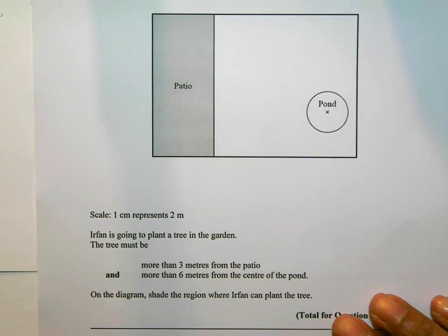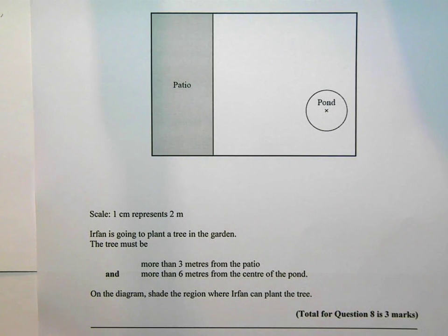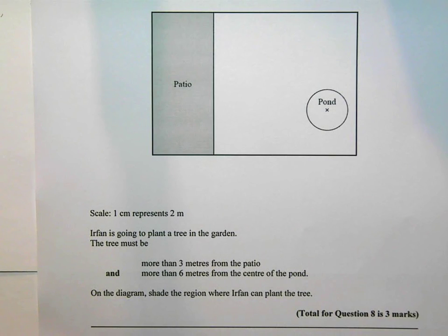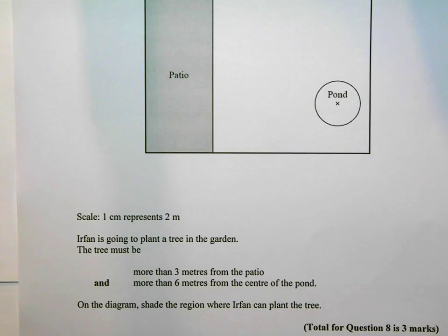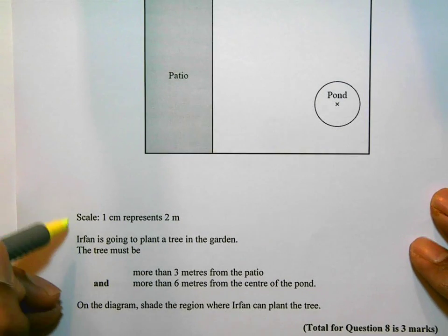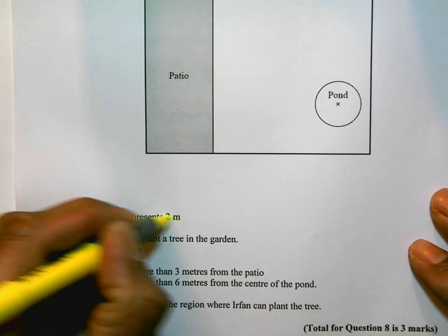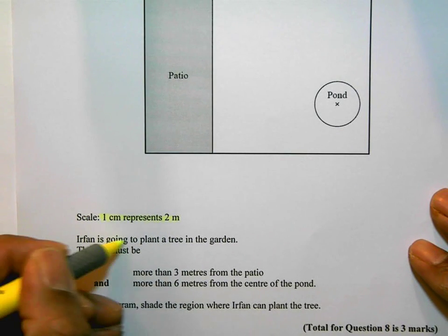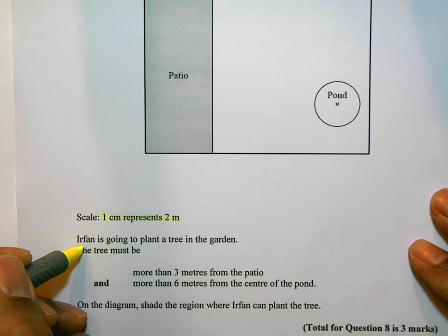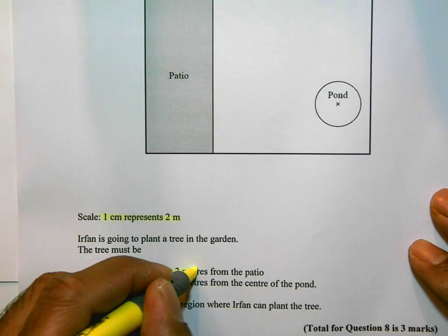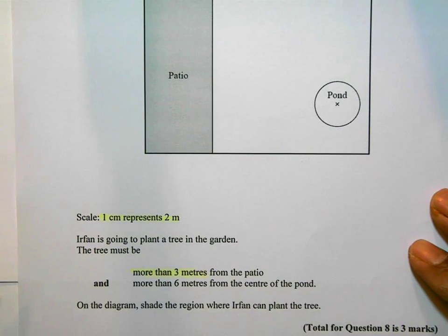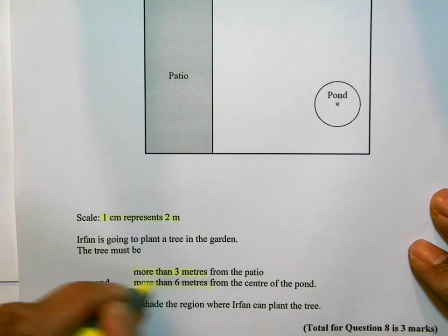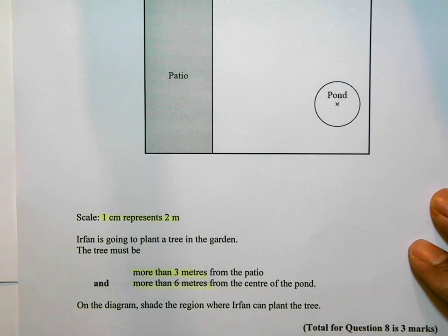Looking at this bit of the question, the question says the scale is one centimeter represents two meters. They told us that again. Irfan is going to plant a tree in the garden. The tree must be more than three meters from the patio and more than six meters from the center of the pond.